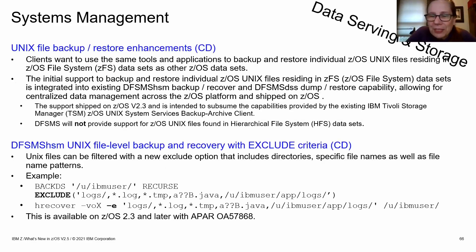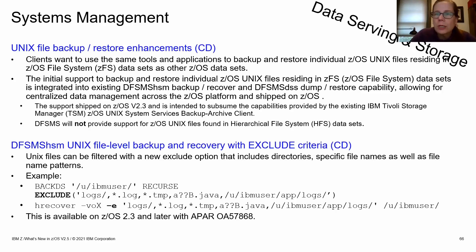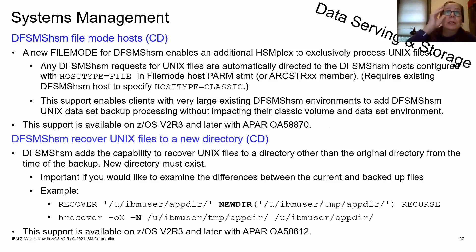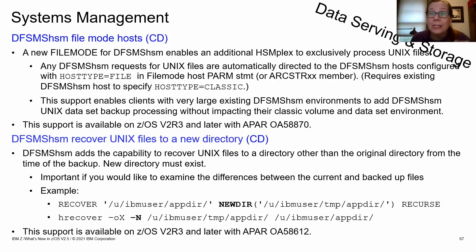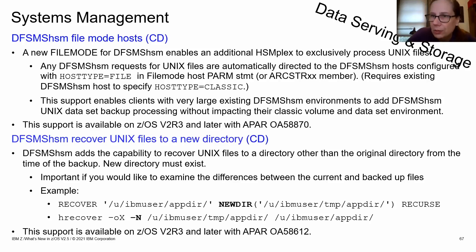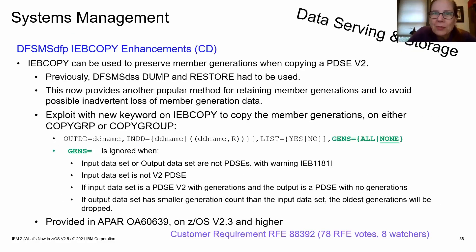Unix file backup and restore enhancements in HSM: you can now specify exclude criteria when backing up a directory. You can designate an HSM host to process exclusively Unix requests using the HOSTTYPE statement, allowing your primary HSM host to focus on traditional work. When recovering, you can specify a different target directory instead of overwriting the original — useful for comparing versions. There's also full support for IEBCOPY to preserve PDSE Version 2 generations.